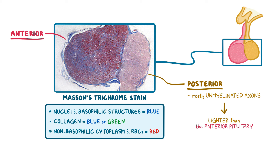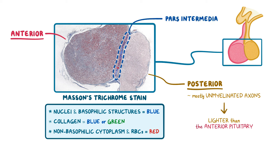In between the anterior pituitary and posterior pituitary is a thin strip of cystic tissue called the pars intermedia, which is part of the anterior pituitary because the cysts are actually remnants of Rathke's pouch — the embryological structure that eventually develops into the anterior pituitary.